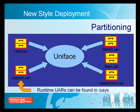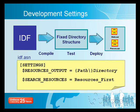The Uniface UAR files can be found in the usys directory. At development time, there are two settings you have to add to your assignment file. The first of these is $resources output, which specifies the path to which Uniface will create the fixed directory structure for the compiled components. You do not have to create this structure yourself — you just specify the base location. We will look at $search resources in more detail in two slides.